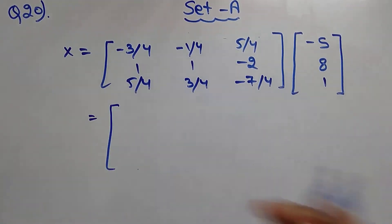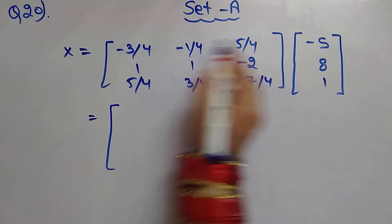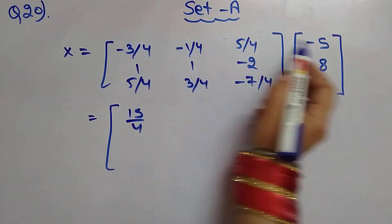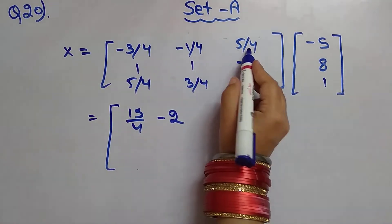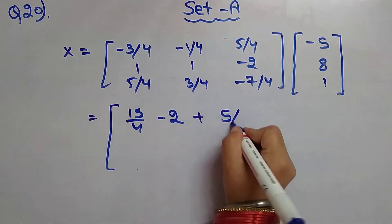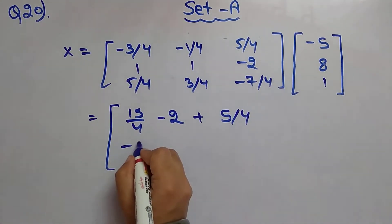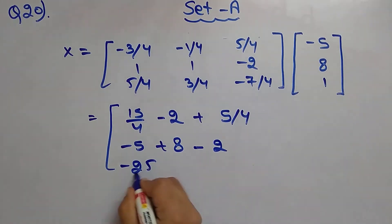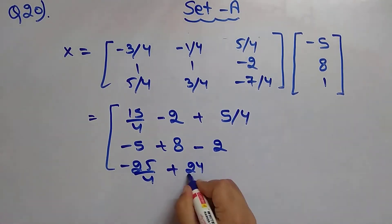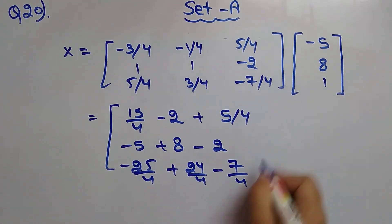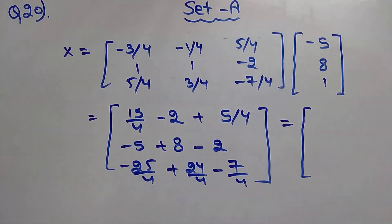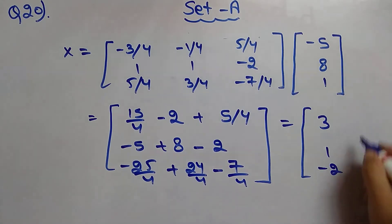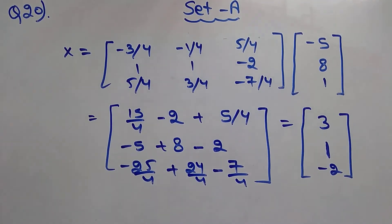Multiplying: the first component gives 15/4 minus 8 plus 5/4 equals 20/4 minus 8 equals 5 minus 8... On solving, we get x equals 3, y equals 1, and z equals negative 2. Thank you for watching this video, bye bye.